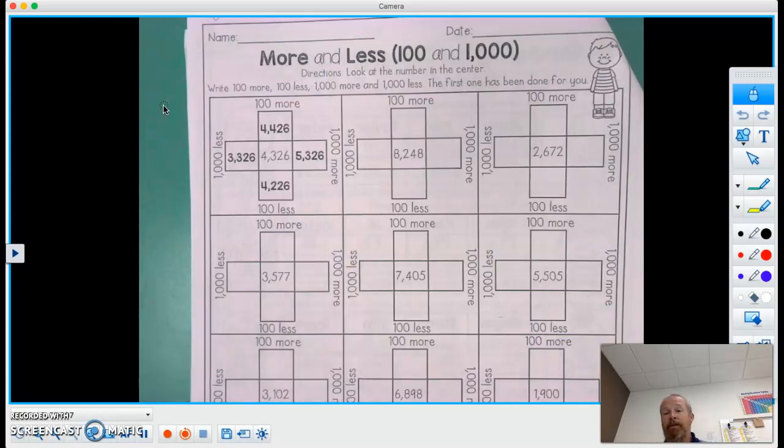So directions are look at the number in the center, write 100 more, 100 less, 1,000 more, 1,000 less. The first one has been done for you.